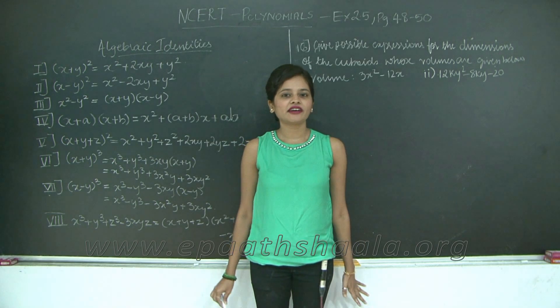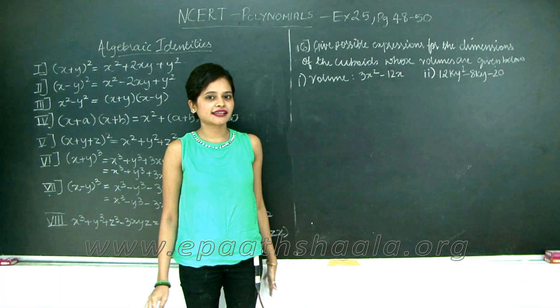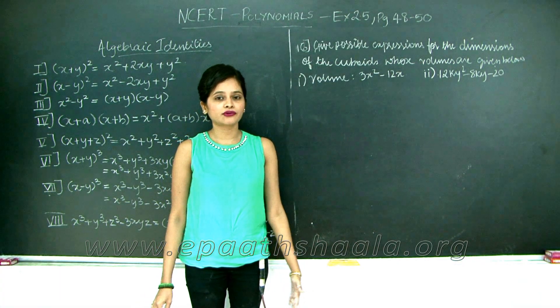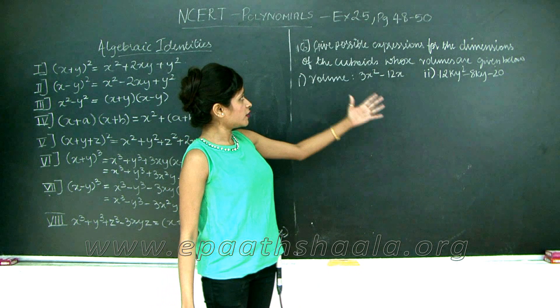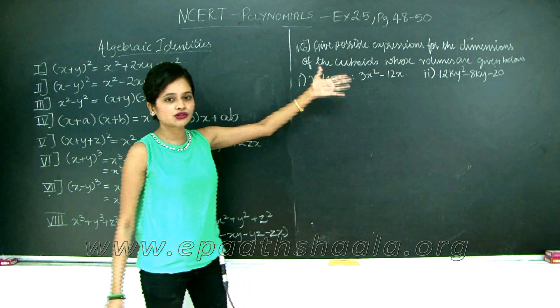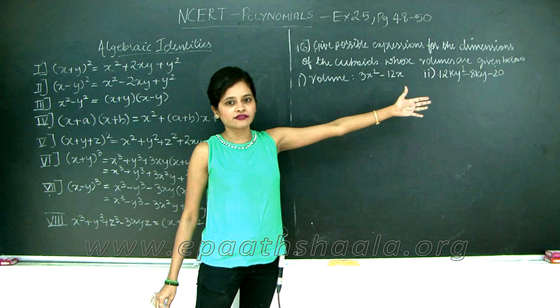Hello students, so finally we have reached to the last section of our exercise 2.5 and the end of the chapter before we do the summary wherein we have to find possible expressions for the dimensions of cuboids whose volumes are given below.